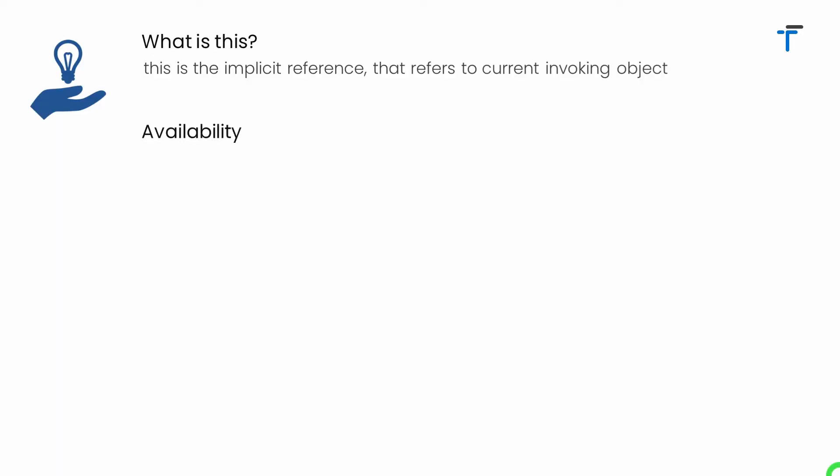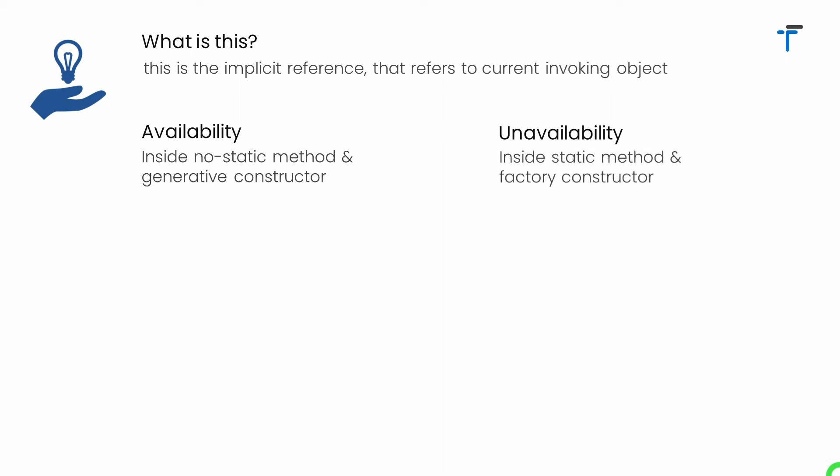Now let's understand where this reference is available. It is available in two places: first, inside a non-static method, and second, inside a generative constructor. We cannot use it inside a static method, and we don't have access to this inside a factory constructor, because static methods and factory constructors cannot have an invoking object.